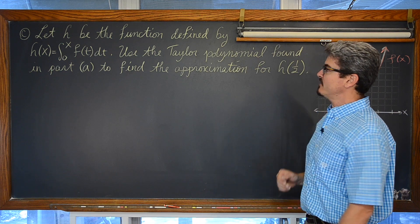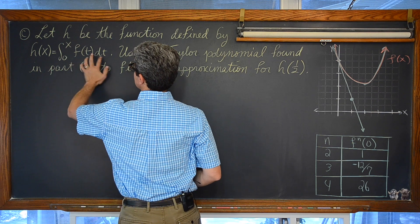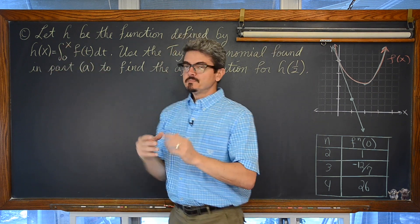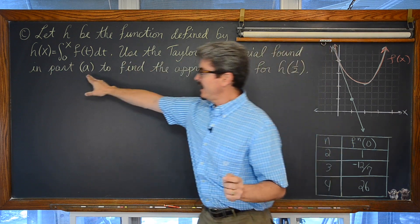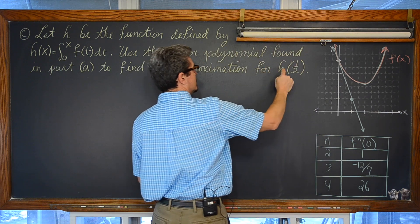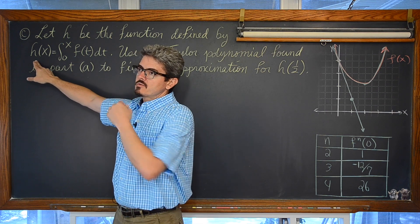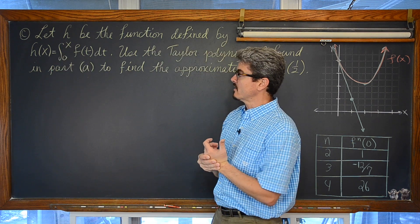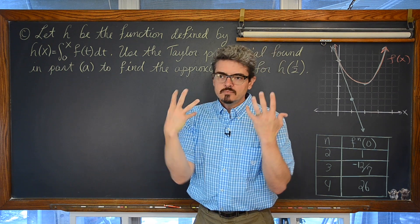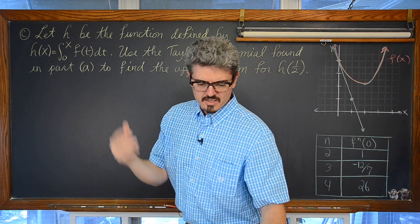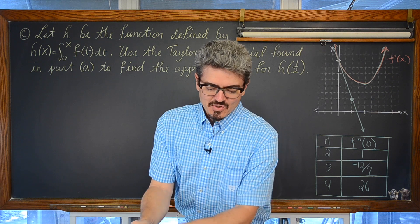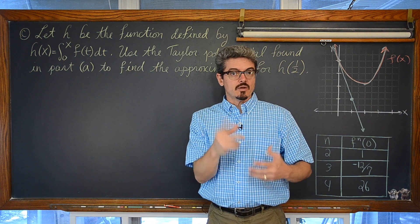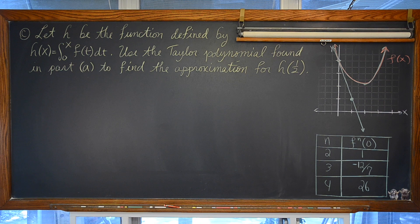For part C, let h be the function defined by h of x equals the definite integral from 0 to x of f(t) dt. Basically we have an accumulation function starting from zero, accumulating the rate of change for h(x). We are going to use the Taylor polynomial found in part A to approximate h of one-half. h is closely related to f(x); the independent variable is used as the upper limit of the accumulation function.